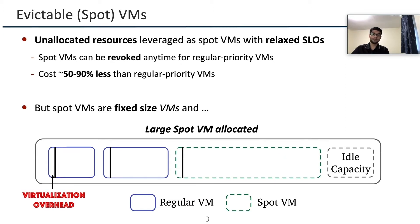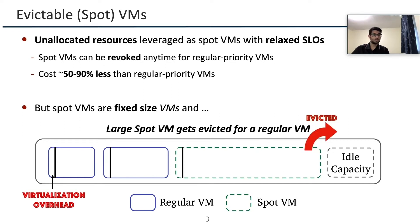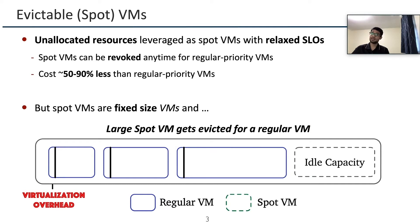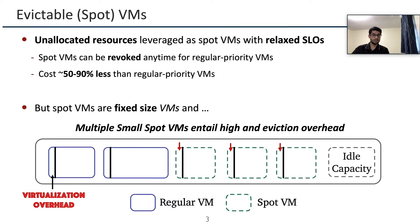To illustrate more spot VM limitations, let's go through this example. When a request for a large spot VM comes in, it will be allocated as shown. Later, when a request for a regular VM comes in and this requires more idle capacity than available on the host, this results in eviction of the large spot VM to make room for the regular VM. The key result is that large spot VMs have high eviction rates. On the other hand, if you have multiple smaller spot VMs, there is substantial overhead required for hosting many VMs.